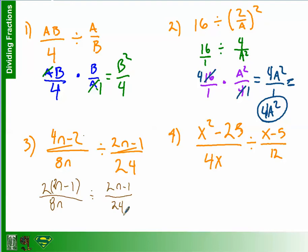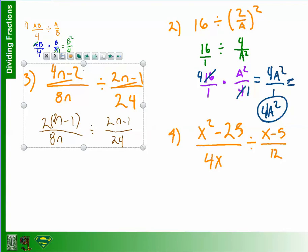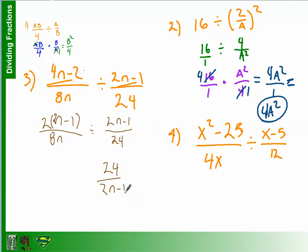So that was the only new step that we have to deal with. What do we have to do now? Go back to the same steps we had before. Nothing changes. You change 2N minus 1 over 24 to its reciprocal. So we're going to have to take the reciprocal here. So we'll take the reciprocal. So now we have 24 over 2N minus 1. What happens to the division? Becomes multiplication. And so we have 2 times 2N minus 1 over 8N.